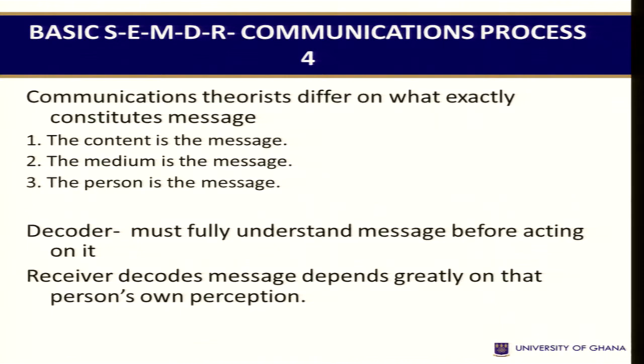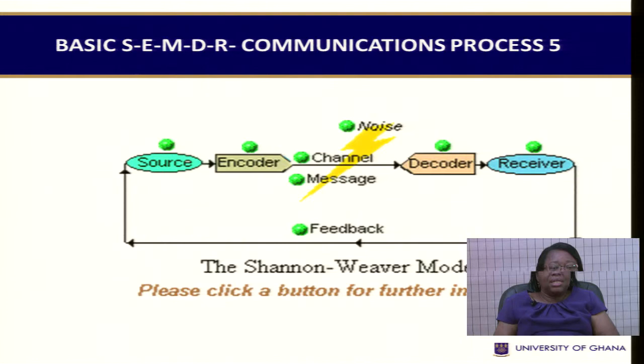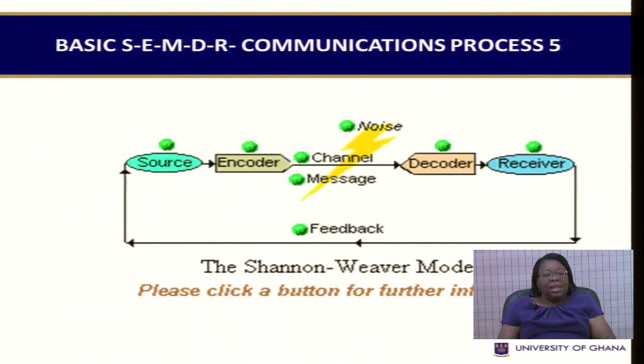At the decoder stage, the message has arrived and is meant for a receiver. But the message must first be decoded — it must be fully understood before the receiver can act on it. The receiver decodes the message based on their own perception. This is the typical SEMDR communication process: the source sends information, it is encoded, comes through a channel, reaches the receiver who decodes it, and then you get the feedback. This is popularly known as the Shannon-Weaver model of communication.